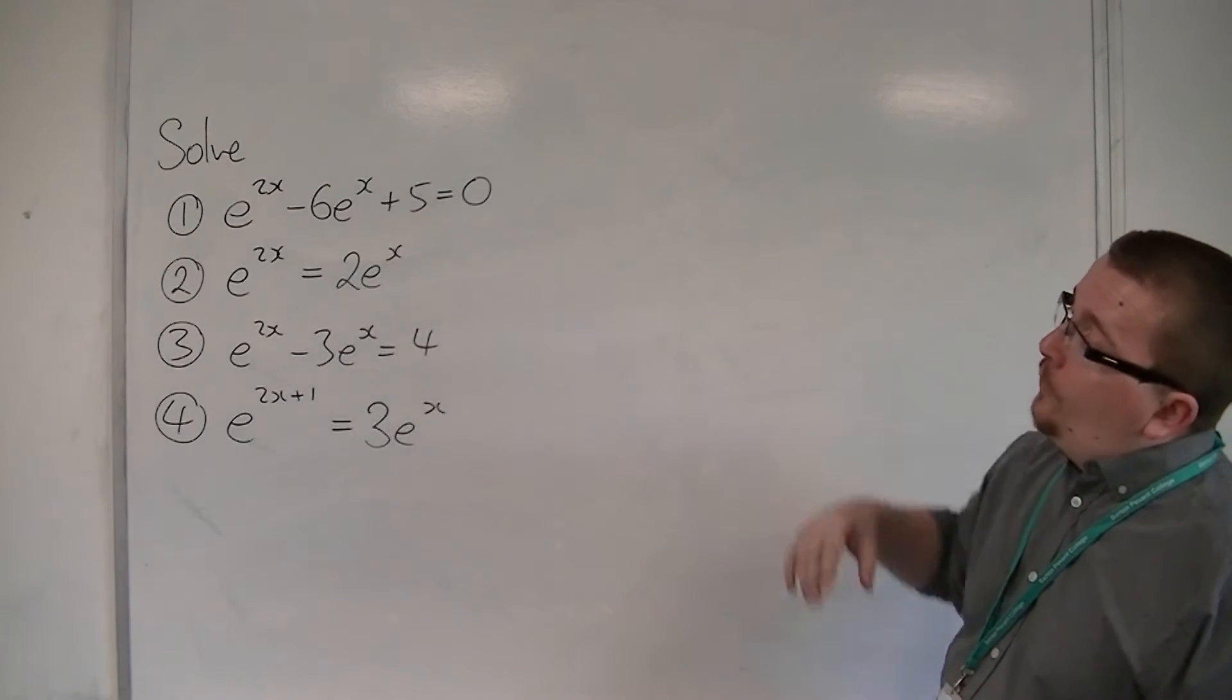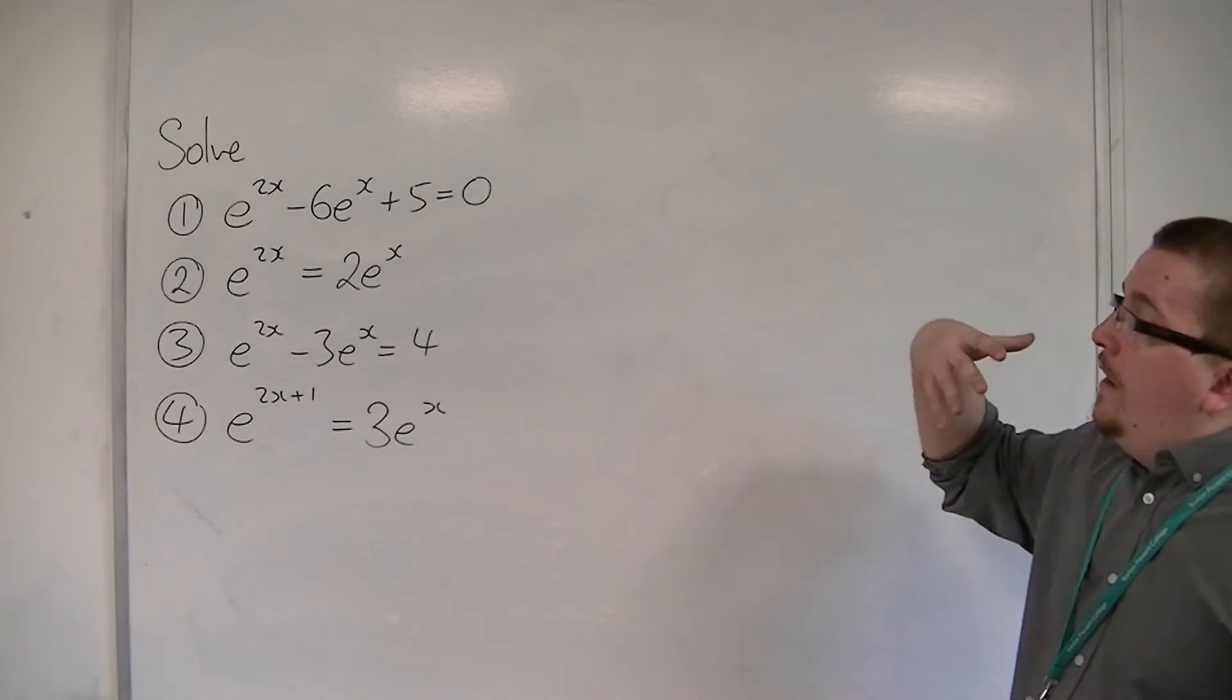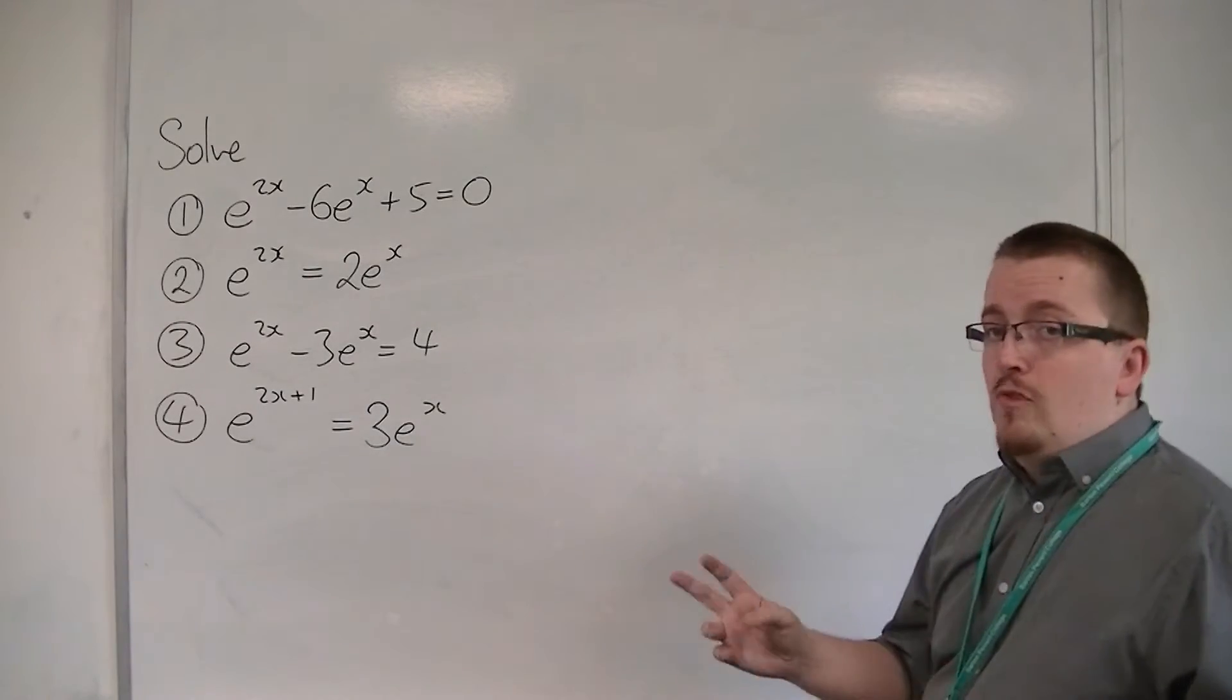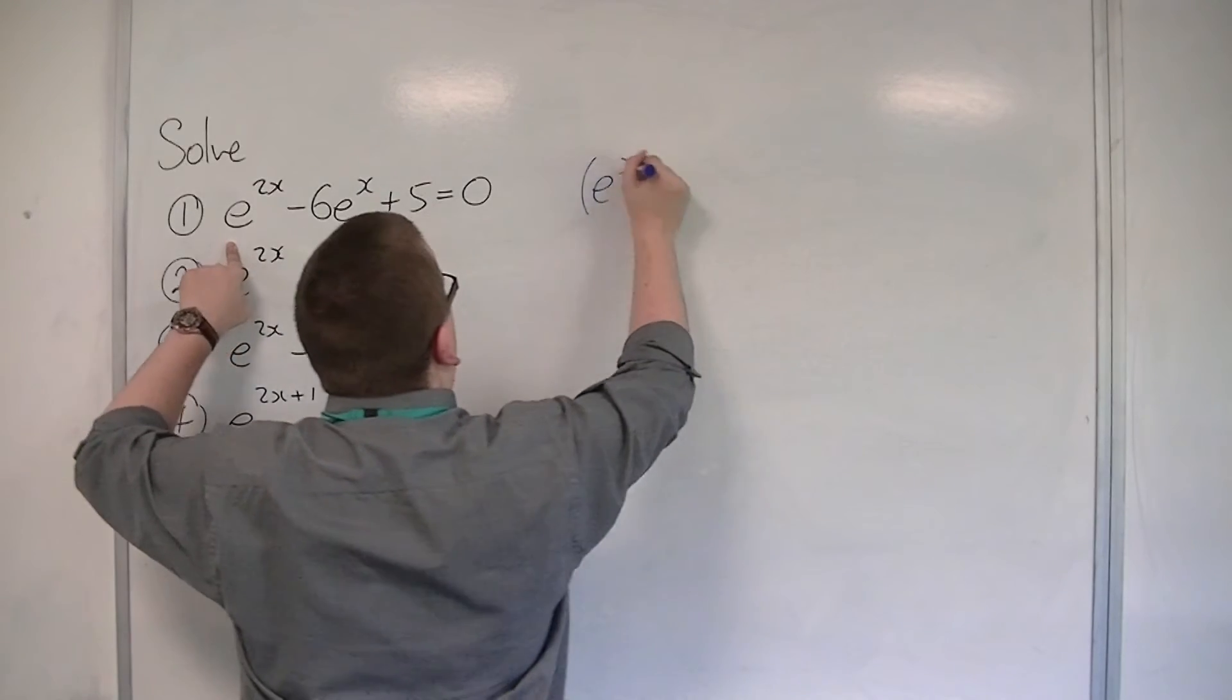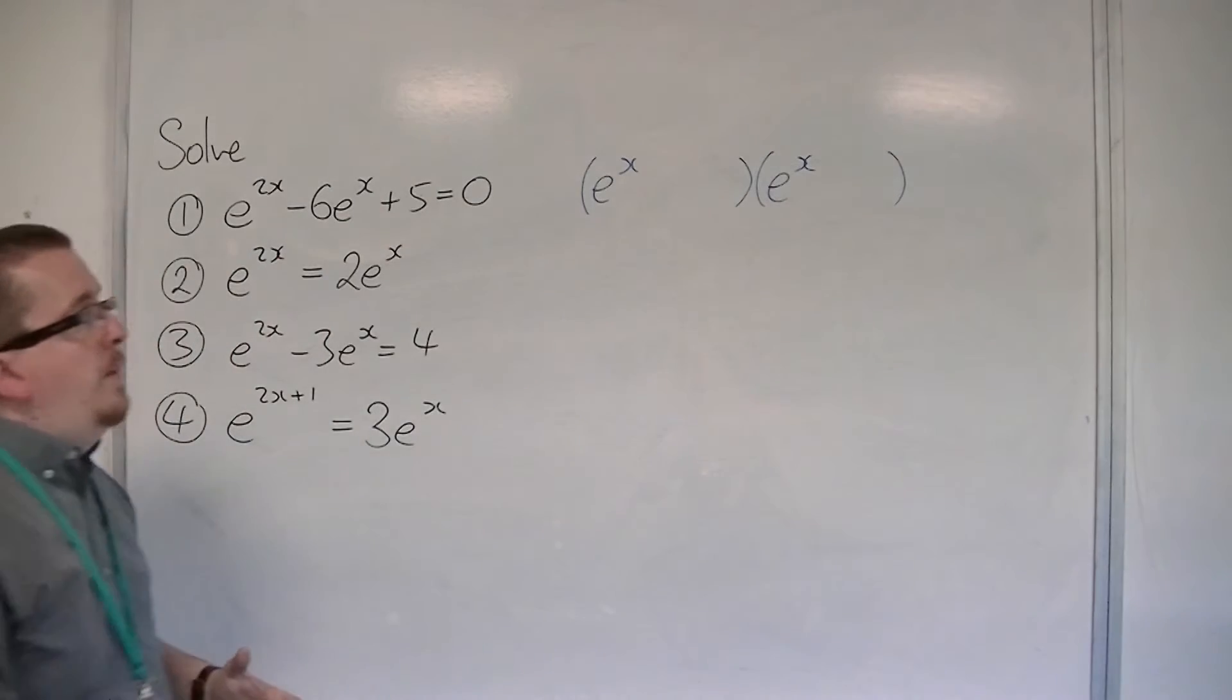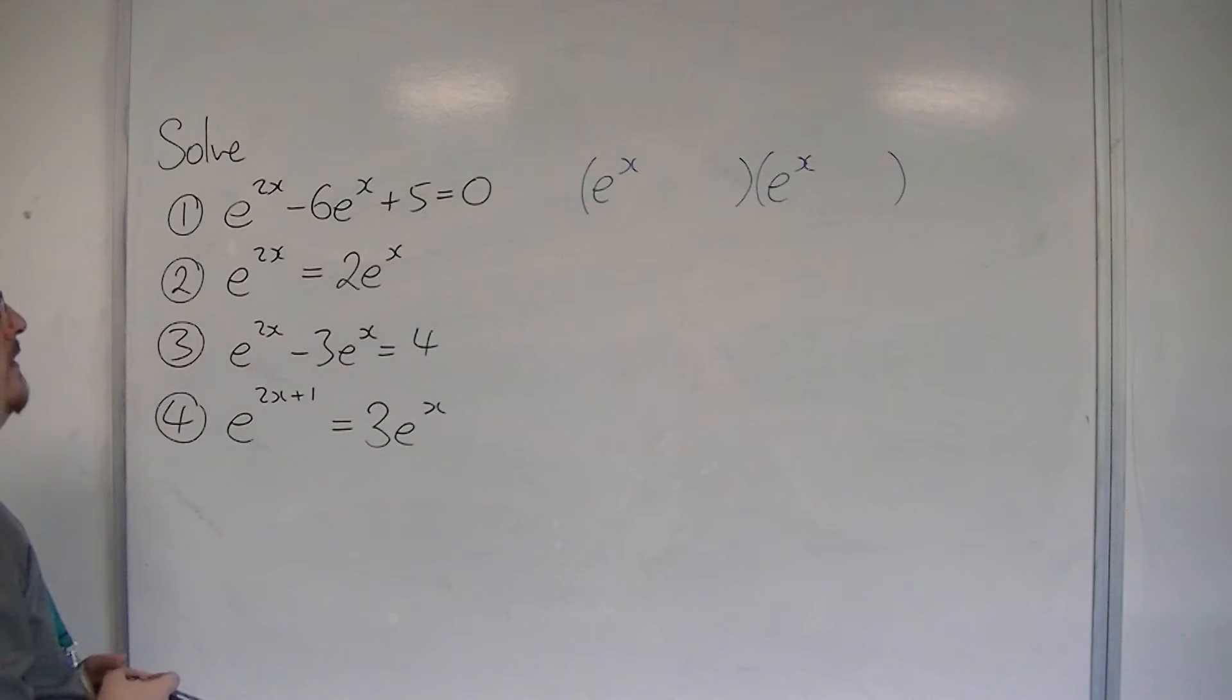For the first one, it's very similar to how I did the previous example, where I can factorise this because it's actually a hidden quadratic. So I can have e to the x and e to the x factorising. Now you can do this by replacing e to the x with y if you like. I'm going to go straight in and do it this way.